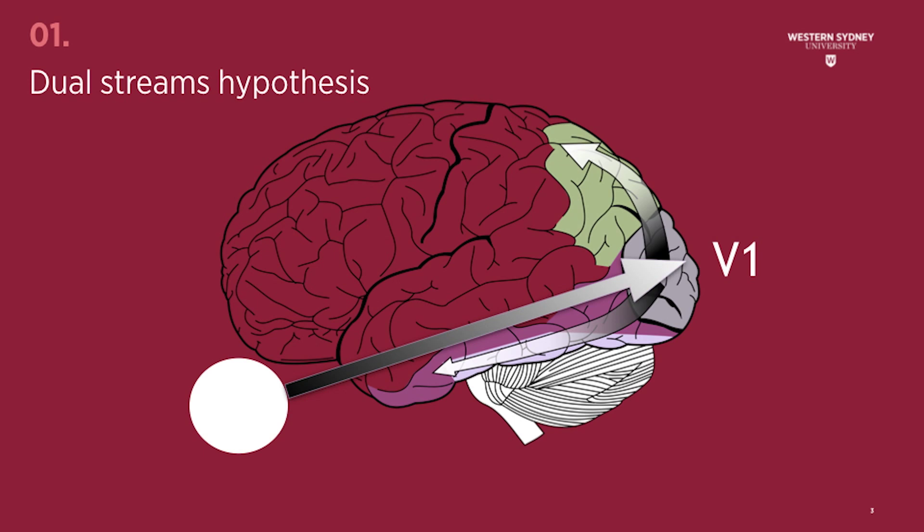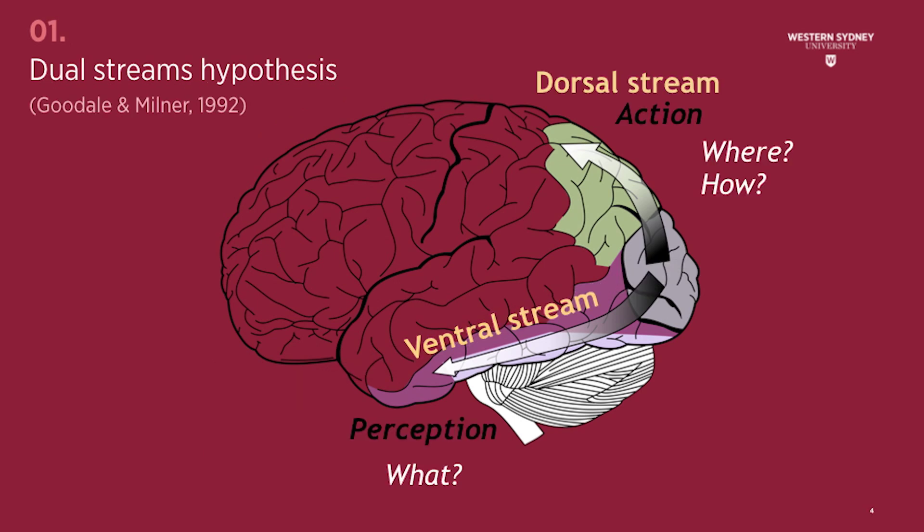Part 1: The dual streams hypothesis. In our previous explorations of the human visual system, we discussed how visually evoked neural information is transmitted from the retina to the primary visual cortex via the lateral geniculate nucleus. Once this neural information reaches the primary visual cortex, or V1, it undergoes a bifurcation into two main streams. The dorsal pathway projects towards the top of the head and includes postparietal cortex, while the ventral stream travels through the lower left and right sides of the brain and includes the brain's temporal lobes. Each stream is associated with distinct perceptual and behavioural functions.